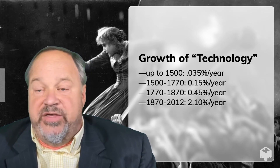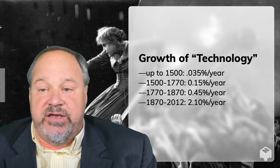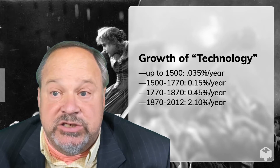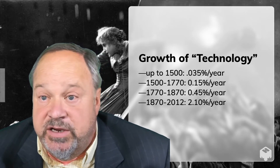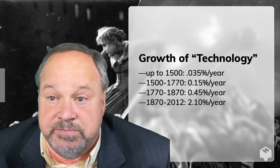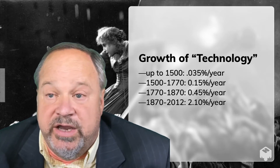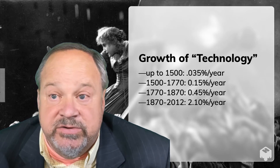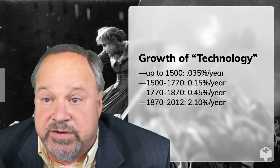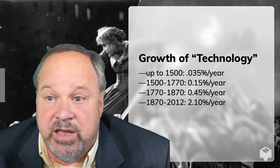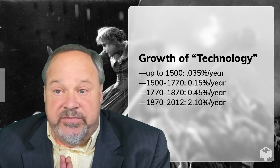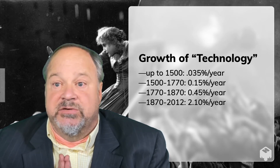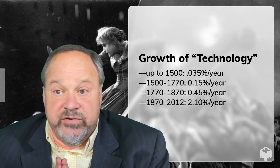If we try to put some rough magnitudes on this: in the years from 1000 BC up to 1500, the rate of growth of human technology — the amount by which each year our ability to manipulate nature and organize ourselves increases — grew by 0.035% per year, that's 3.5% per century. Then from 1500 to 1770, the pace leaps up to 0.15% per year — a century now sees 15% improvement. From 1770 to 1870, it's 0.45% per year, and over the course of a century you can see really significant improvements in human technology.